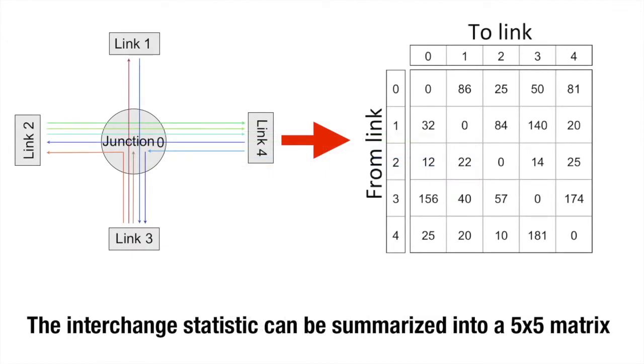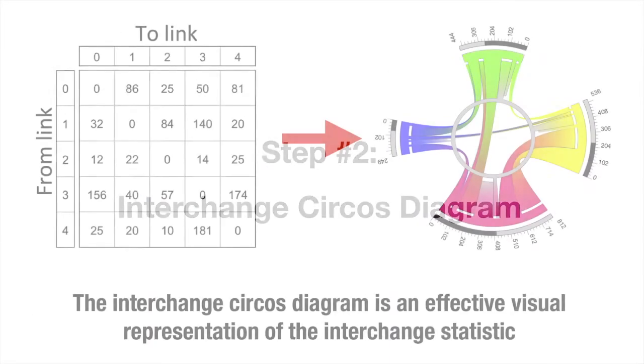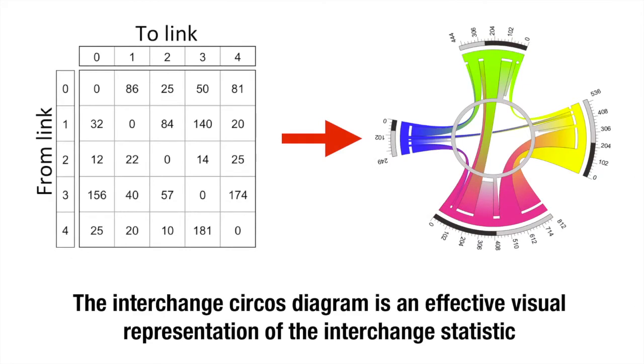The interchange statistic can be summarized into a 5x5 matrix. The interchange circles diagram is an effective visual representation of the interchange statistic.